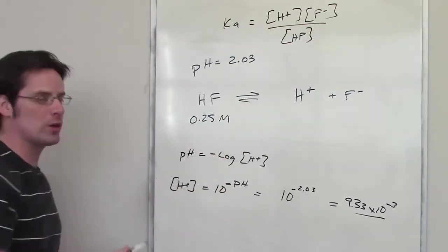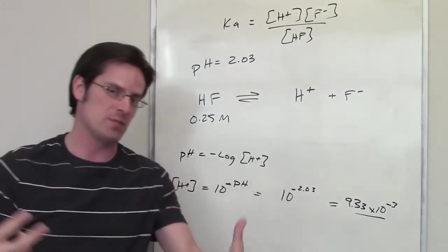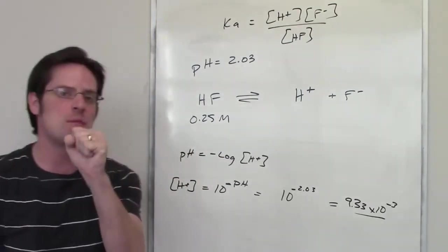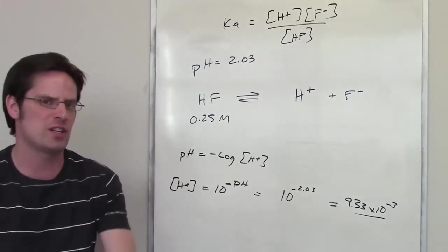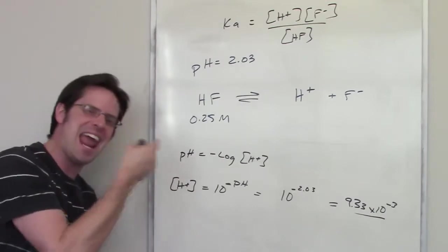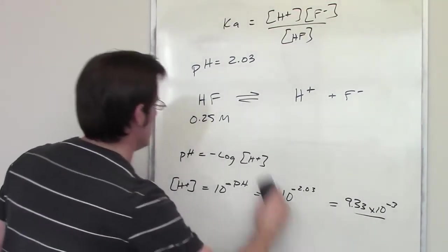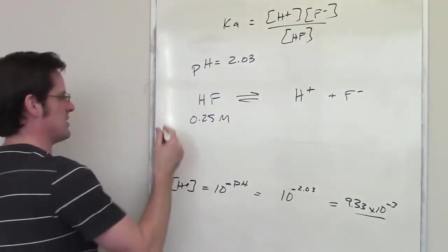Now remember, 0.25 molar is not the concentration of HF at equilibrium. That's the concentration, according to my problem, of HF right at the beginning of this reaction when this reaction was actually set up. So how do I determine what HF's concentration is at the end, at equilibrium? Well, you probably guessed it, or I hope you did at least. We're going to have to set up an ICE table.